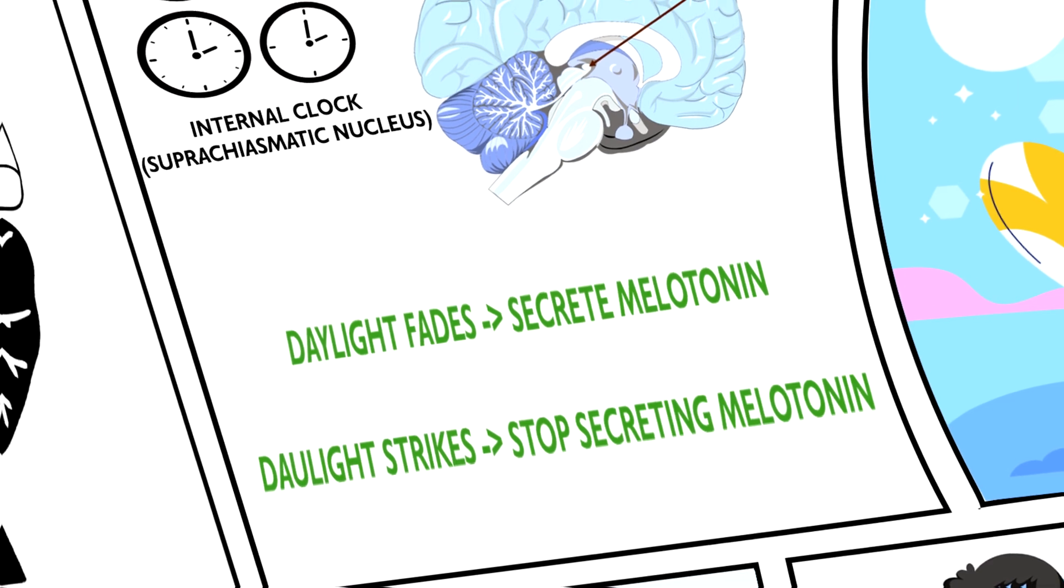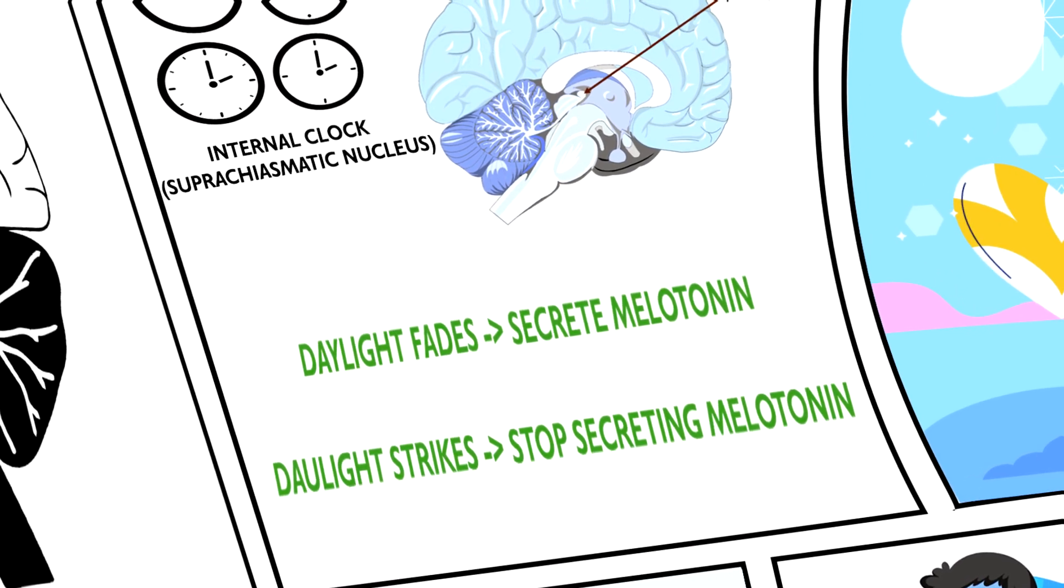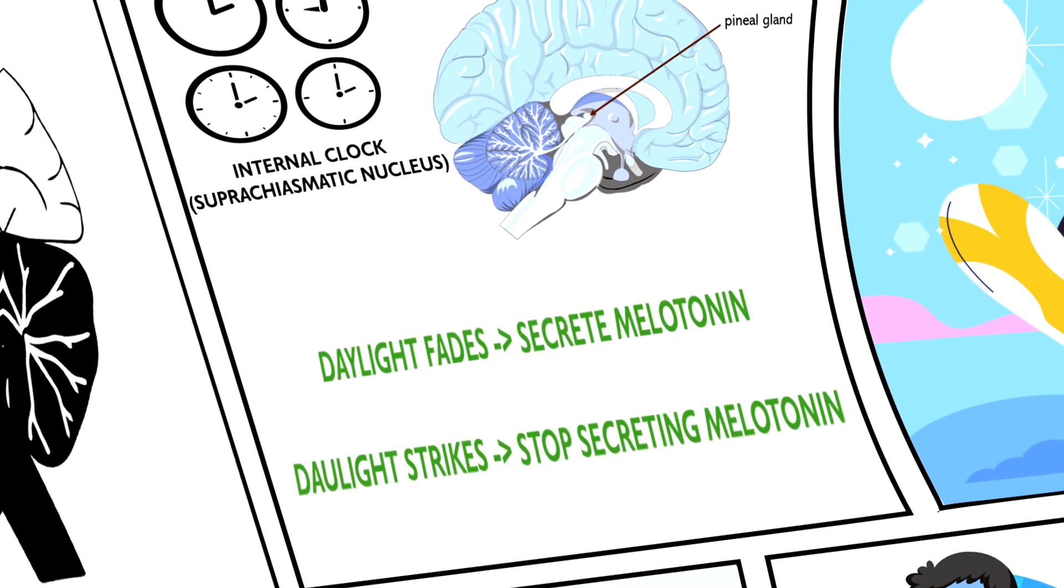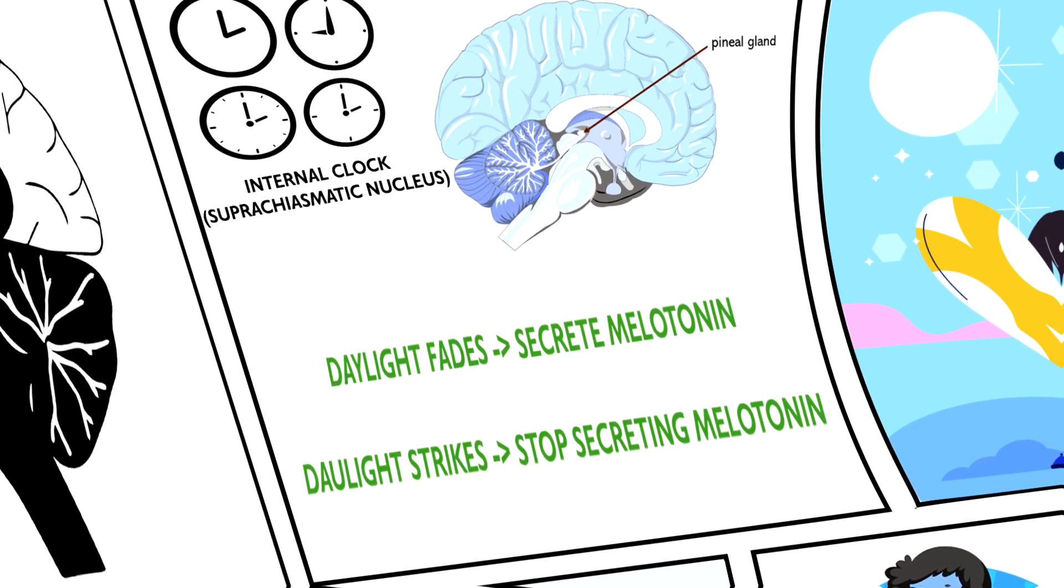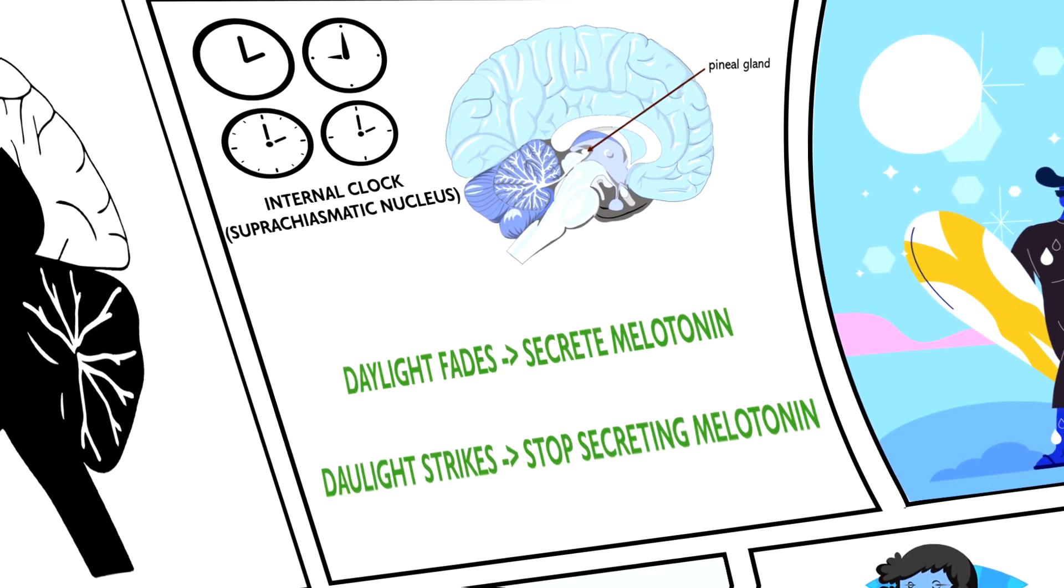When the light comes into your brain through your eyelids in the morning, the internal clock tells the pineal gland to stop secreting melatonin, which enables you to wake up. That's a lot of power for a small little part.